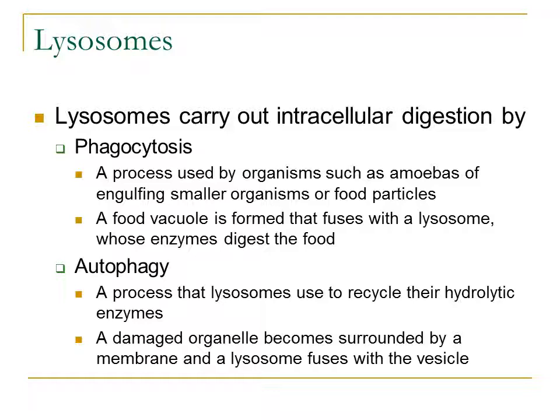Lysosomes are able to digest different components within a cell through two main processes. The first process is called phagocytosis, and this is a process lysosomes use to digest different types of typically food particles. It's used by organisms such as amoebas — unicellular protists — allowing them to engulf smaller organisms or food particles. A food vacuole is formed that fuses with a lysosome, and those enzymes within the lysosome are able to digest the food.